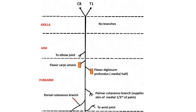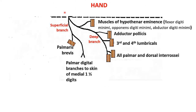These cutaneous branches supply the palmar surface and dorsal surface of the hand — not the digits. When we come to the hand, the nerve divides into a superficial branch and a deep branch. As the name suggests, the superficial branch is mainly cutaneous and provides sensory innervation to the medial one and a half digits. It also supplies one muscle, which is the palmaris brevis.